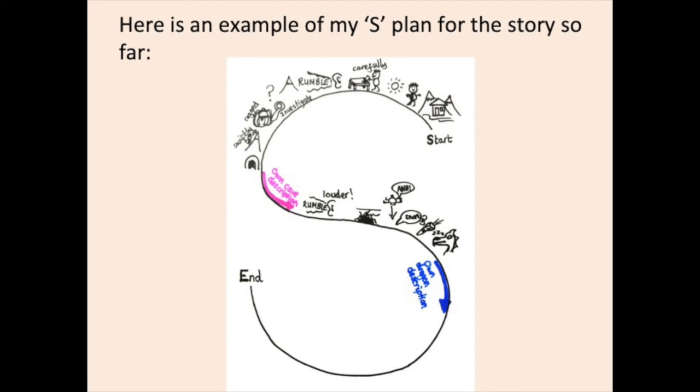And finally, to finish your S plan, you're going to write your ideas as to what you think will happen when Ashton comes face to face with the dragon. Remember, you can be very imaginative. It could be a magical fantasy story. It could be a dramatic horror story.